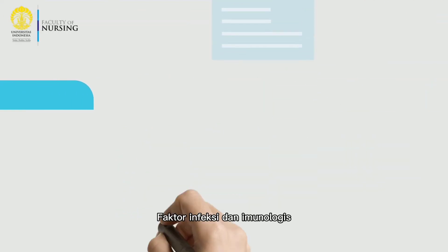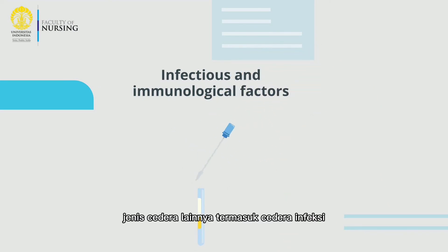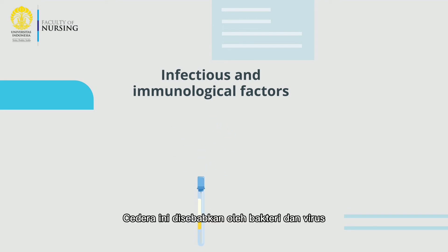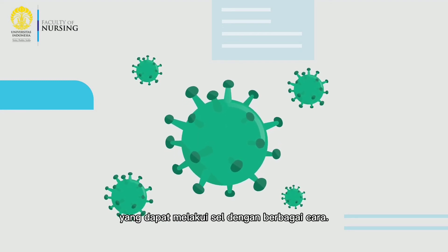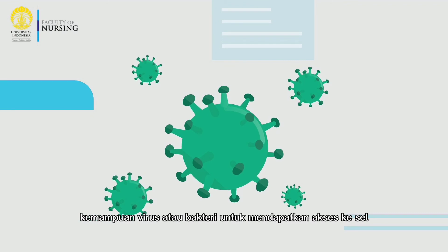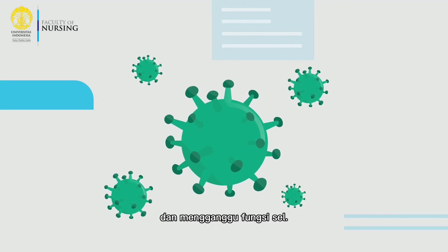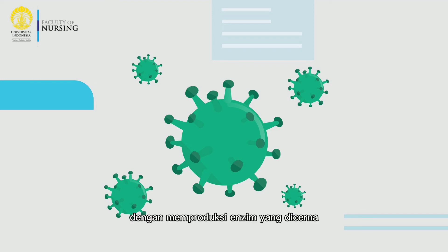Other types of injury include infectious and immunological injuries. These injuries are caused by bacteria and viruses, which are common infectious agents that can injure cells in various ways. The severity of the injury depends on the ability of the virus or bacteria to gain access to cells and interfere with cell function. Injuries can be caused by biological agents or additional injuries by triggering the body's immune response. Bacteria injures cells from the outside by producing enzymes that digest cell membranes and connective tissue.